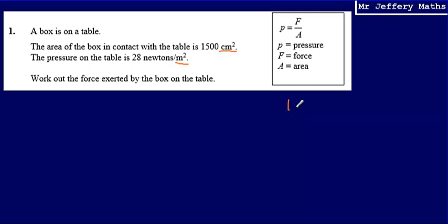Now, it's very tempting to just say, well, because I know that 1 metre is equal to 100 centimetres, it might be very tempting to just divide my area in centimetres squared by 100 and think that that's going to give me metre squared, but it doesn't.